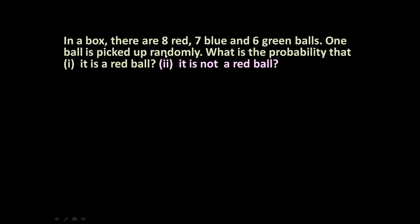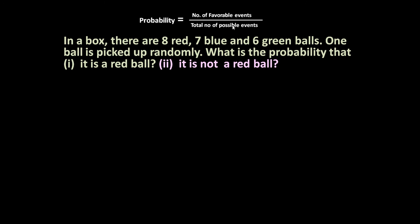Let us focus on the first part, but before that let us see the formula used. Probability is equal to number of favorable events divided by total number of possible events.